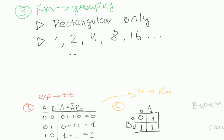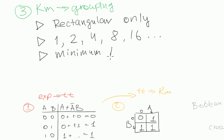Next rule: there should be as few groups as possible — a minimum number of groups. And the next rule is that each group should be as big as possible.